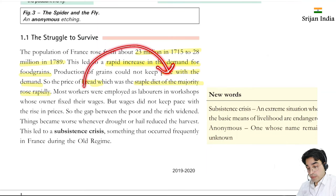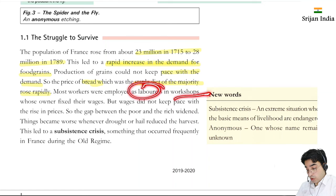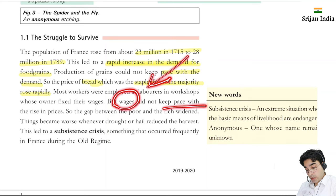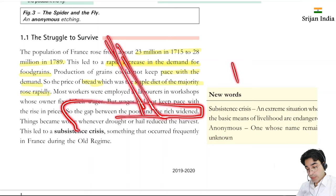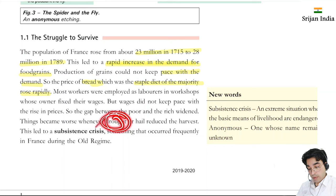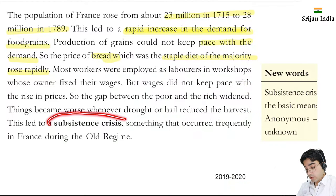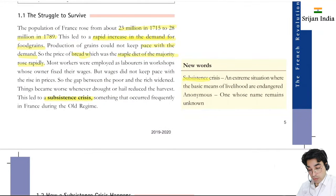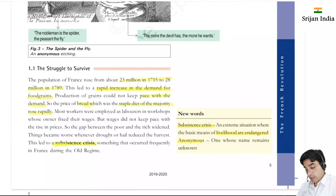Workers employed as laborers in workshops had their wages fixed by the owner, but wages could not keep pace with rising prices. The gap between the poor and the rich widened. Things became worse whenever drought and hail reduced the harvest. This led to a subsistence crisis - something that occurred frequently in France during the old regime. A subsistence crisis means an extreme situation where the basic means of livelihood are endangered.